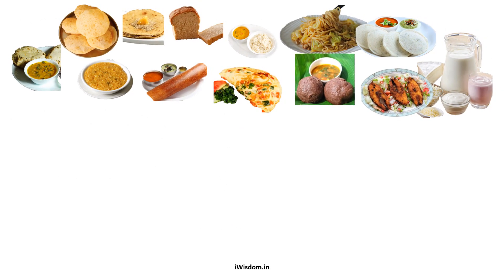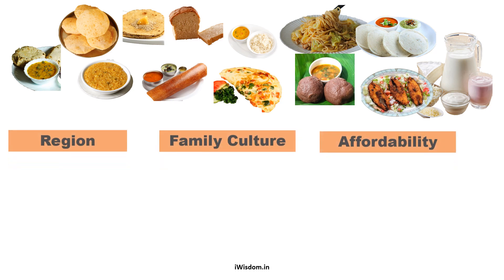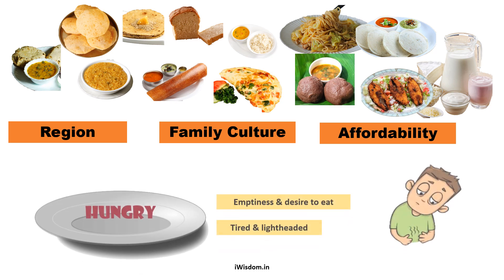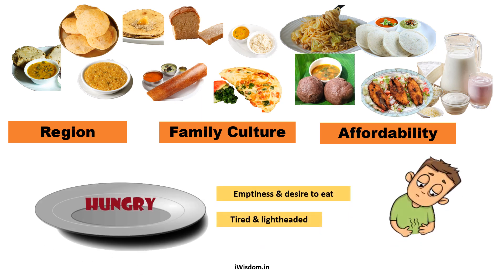Let's summarize what we have learnt so far. There are a variety of foods eaten by different people. It depends on the kind of food available in the region, the family culture, and affordability. We also learnt about hunger and how it feels to be hungry. Food is a necessity for everyone, and nobody can escape from hunger pangs if they don't eat.